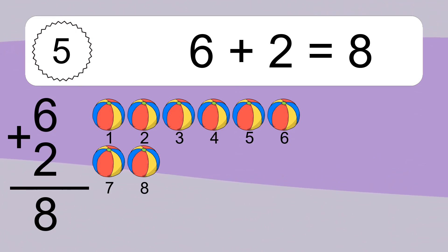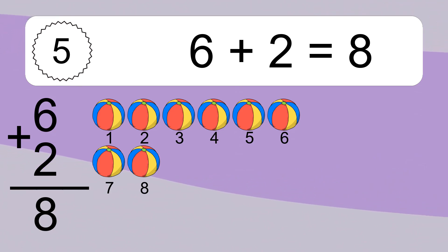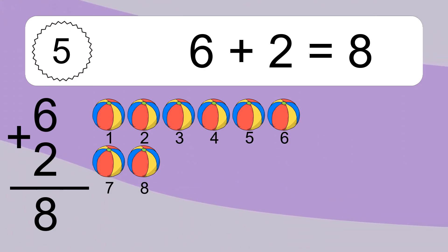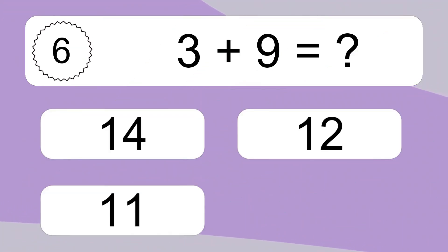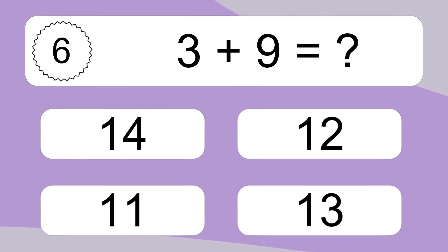Let's count it. 1, 2, 3, 4, 5, 6, 7, 8. 3 plus 9 equals what?